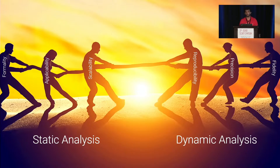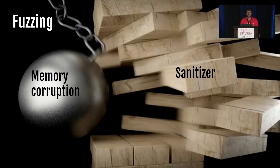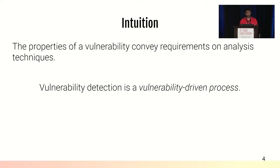We took a closer look into why fuzzers are so good. Fuzzers aim to trigger vulnerabilities such as memory corruption bugs that can be identified by different types of sanitizers. The key idea fuzzers leverage is that sanitizer alerts are a property of memory corruption bugs. From these insights, we identified a relation between vulnerabilities and vulnerability detection techniques. Our intuition is that the properties of a vulnerability convey requirements on its analysis techniques, and this leads us to understand that vulnerability detection is a vulnerability-driven process.